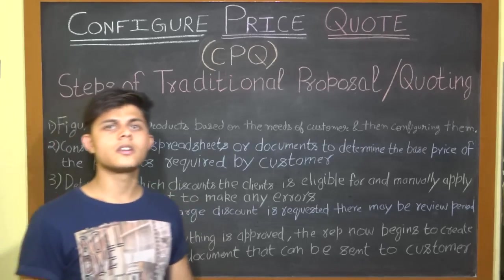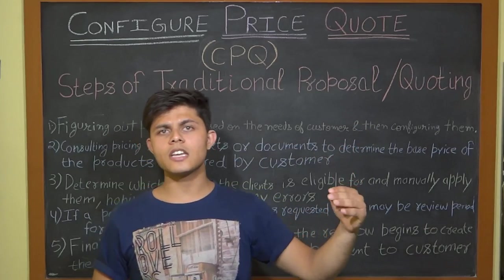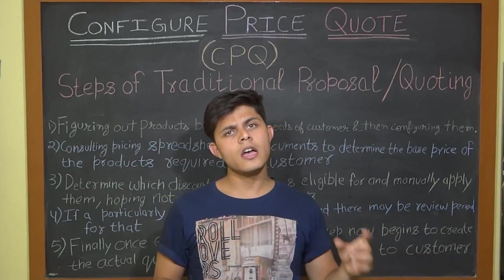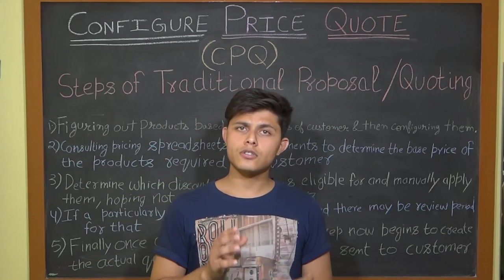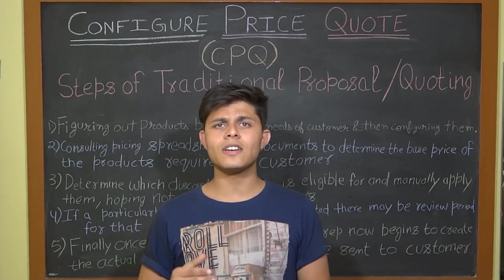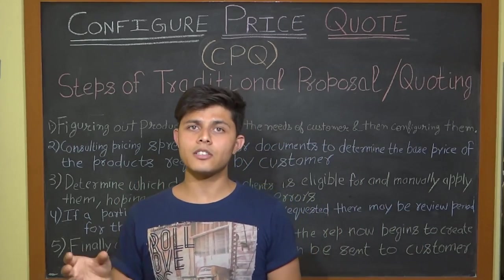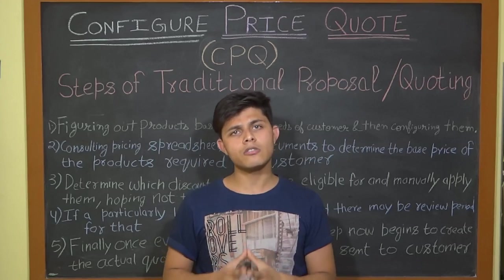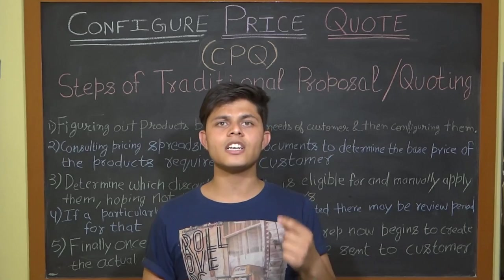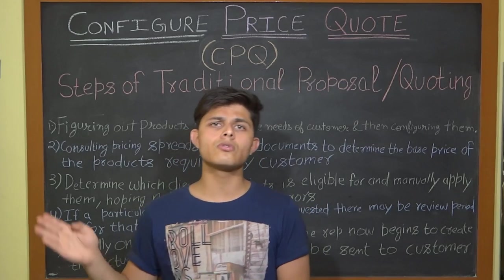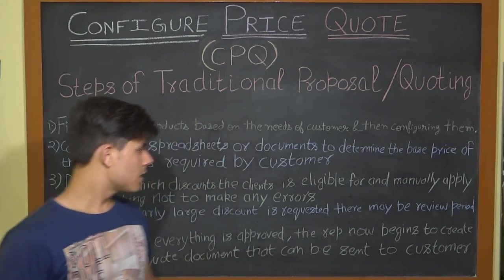Step two is consulting pricing spreadsheets or documents to determine the base price of the products required by the customer. After preparing the product list, you need to mention the base list price for each item. You have to go through those spreadsheets and documents where all the base prices are listed, because a company can sell thousands of products and no one can remember the price of each one.